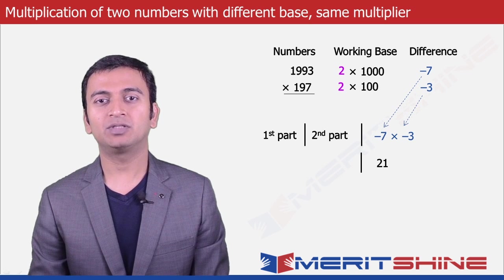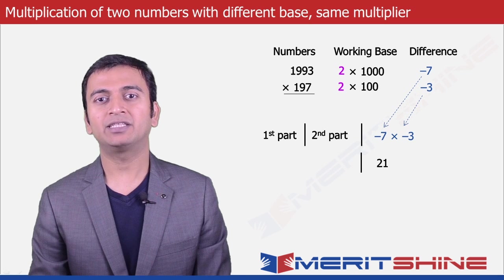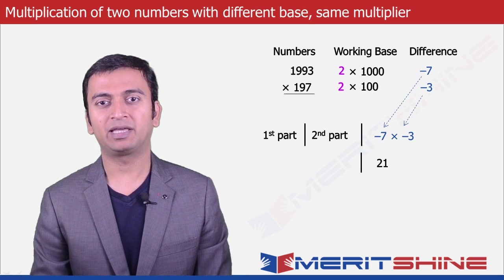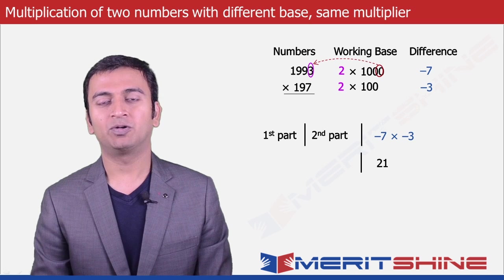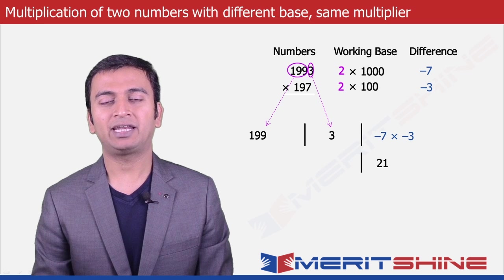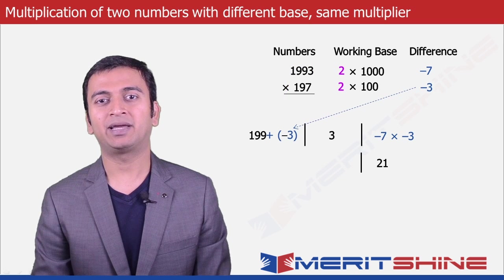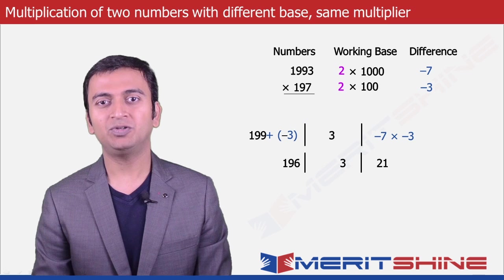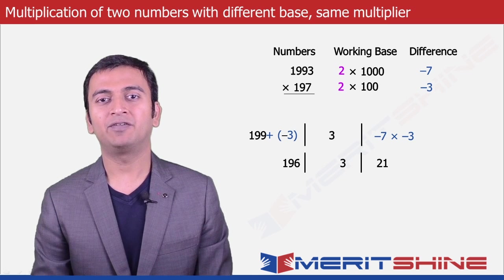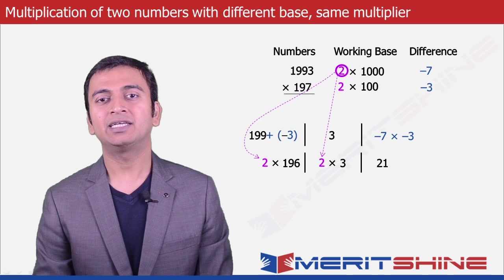To obtain the second part, we will take the larger number and choose as many digits from the right as is the difference in the number of zeros in our working base, which in our case is 3 minus 2, which is 1. So 1993 will be split as 199 and 3. The 3 will come to the second part, and 199 will go to the first part along with the difference from the second number, which is minus 3, making the first part 199 minus 3, which is 196. Since our multiplier was 2, we will now make a minor adjustment: multiplying 196 by 2 gives us 392, and the second part 3 will also be multiplied by 2, giving us 6.